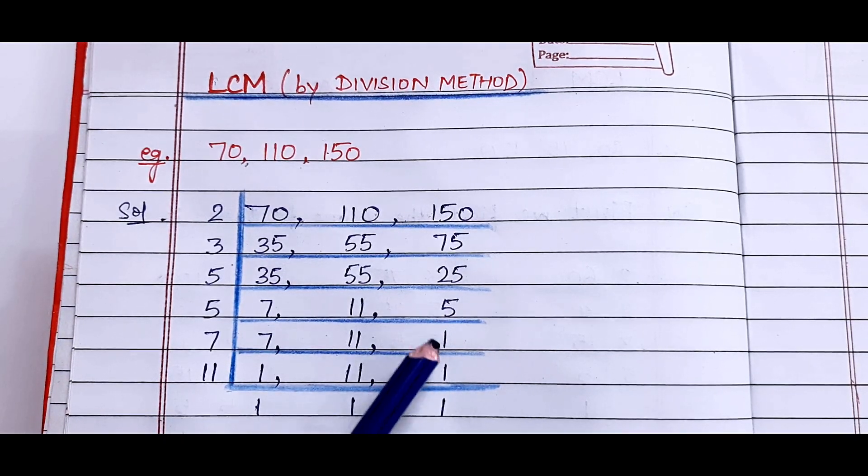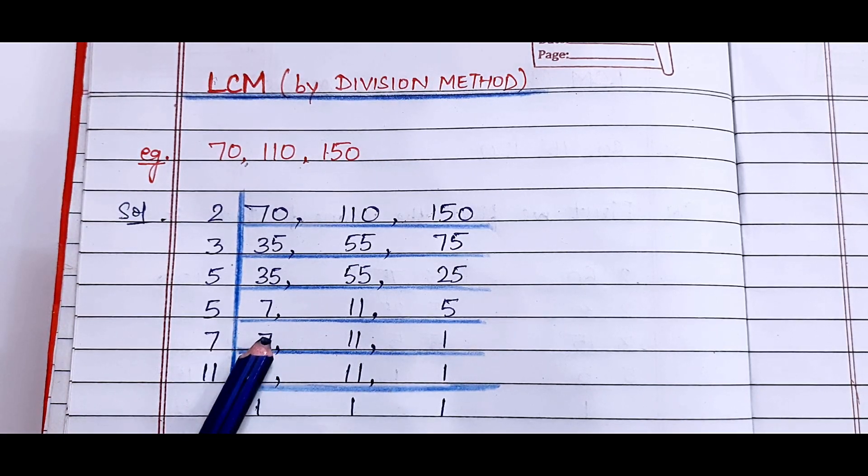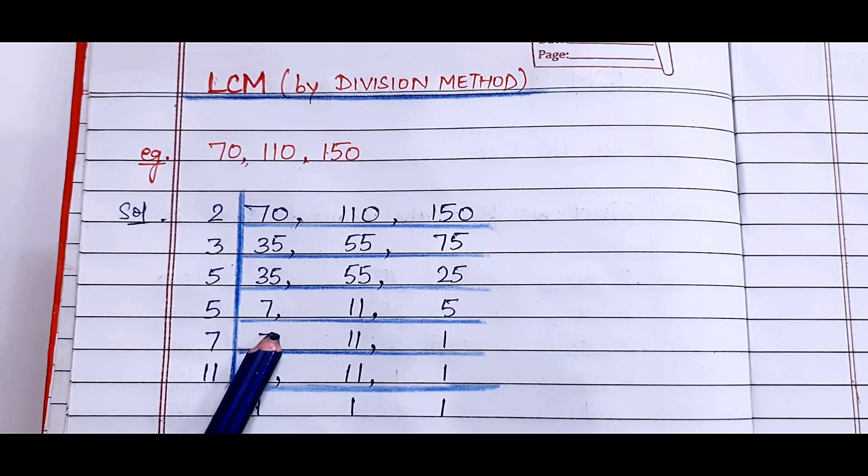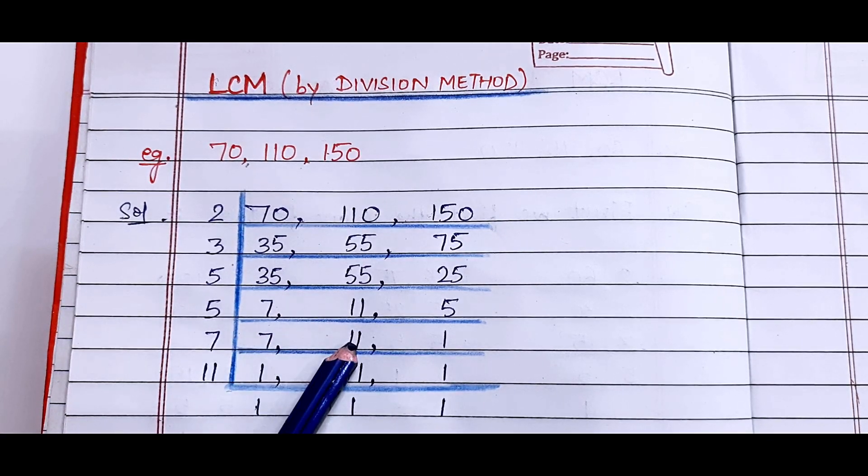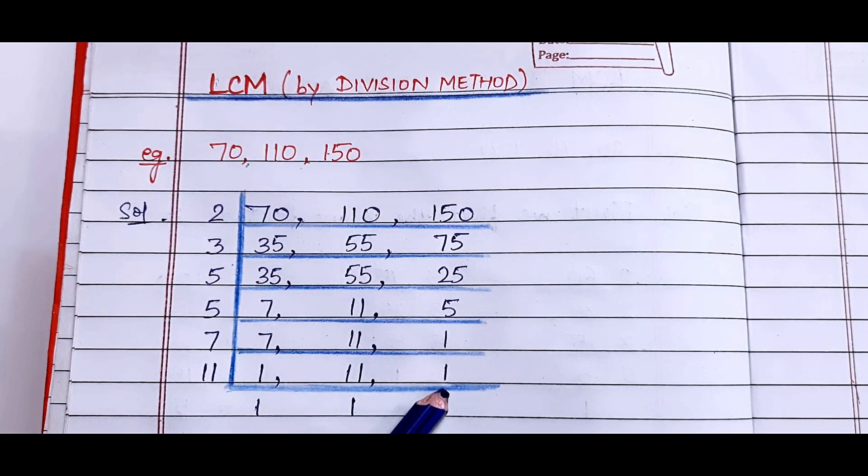Yes, 1 time, so I have written 1 here. Now the next prime number is 7. 7 times 1 is 7. 11 is not divisible, so we will write 11 as it is. 1 we will copy.